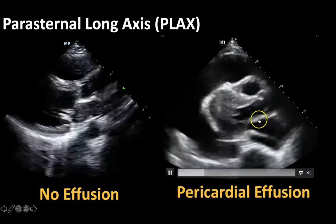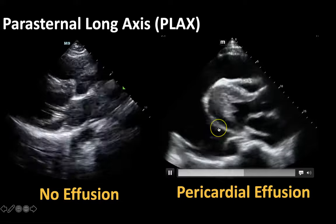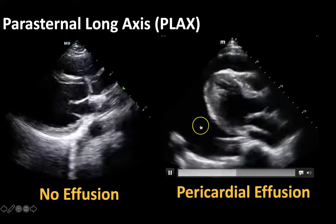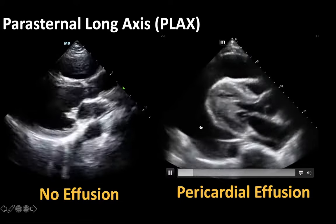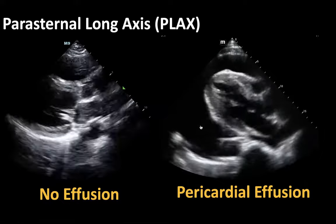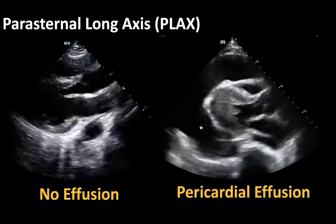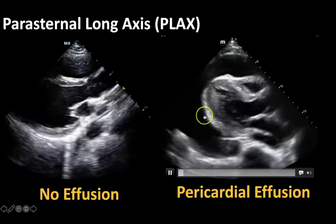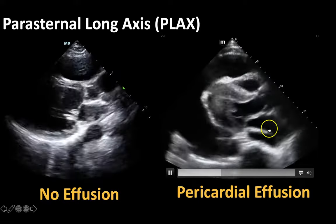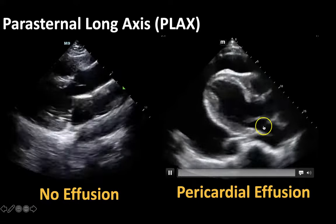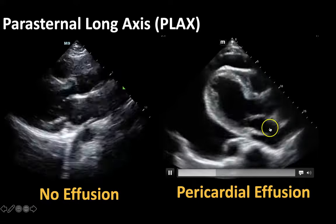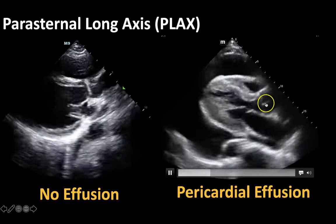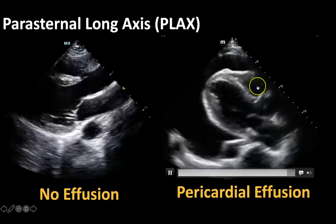Then we look at this heart on the right side of the screen, which looks very different from the one on the left. This is actually also a parasternal long axis view — it just looks a bit different because there's a large pericardial effusion around this heart. To orient you, we do still have here's your left atrium, your left ventricle, your aortic outflow tract, and your right ventricle.